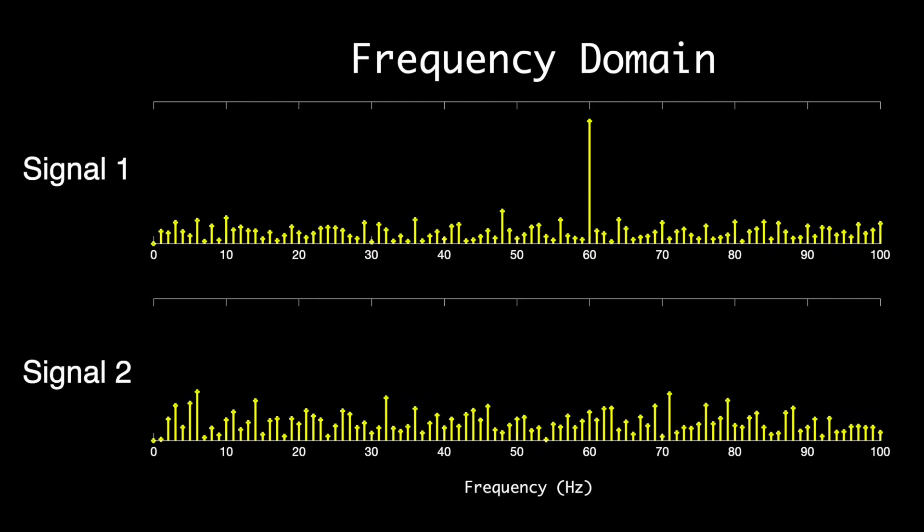But if all you're interested in is the magnitude of the frequency, that is how much of a particular frequency there is in your signal, regardless of phase, then you just have to look at the absolute value. So for many signal processing applications, like answering our 60 hertz question, you don't need a real and imaginary component to determine that, you just need the magnitude. So we take the absolute value to get that magnitude.